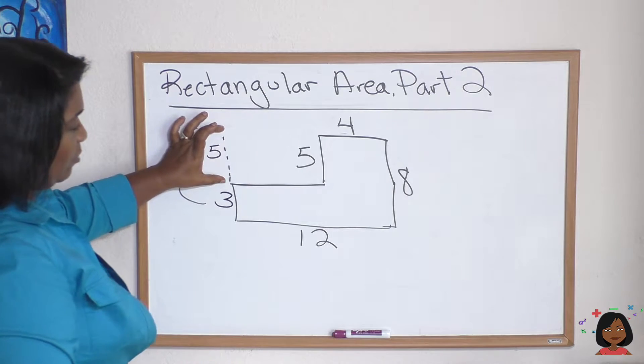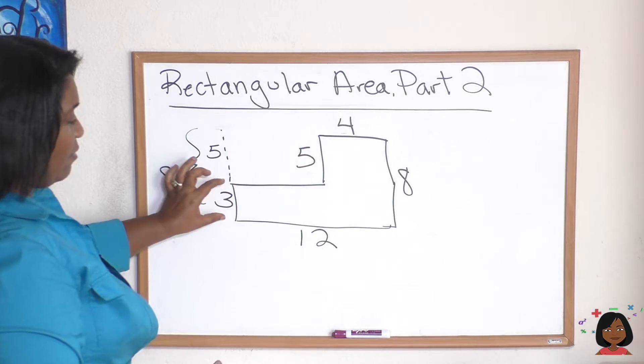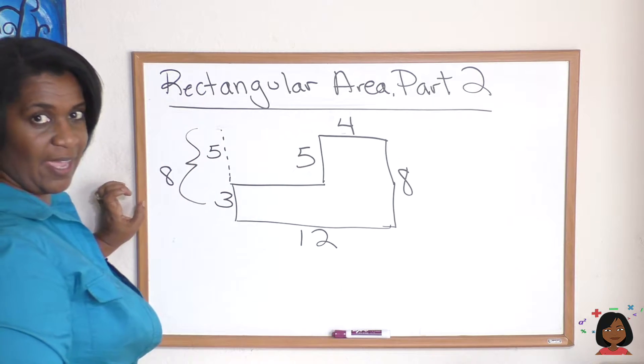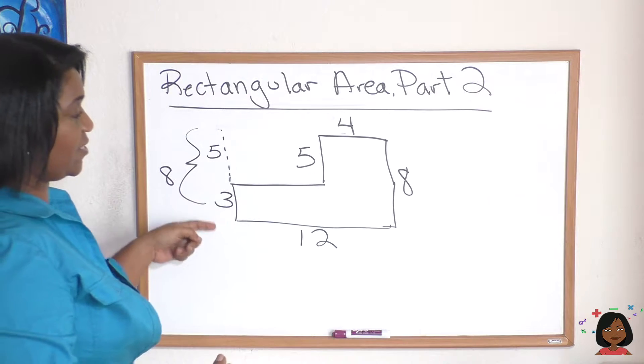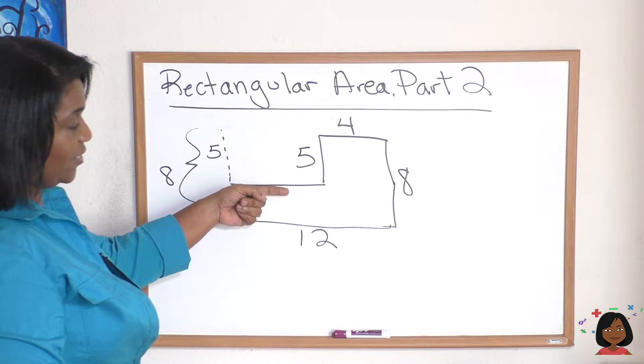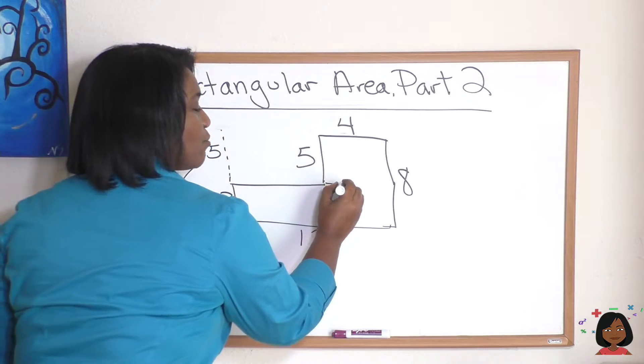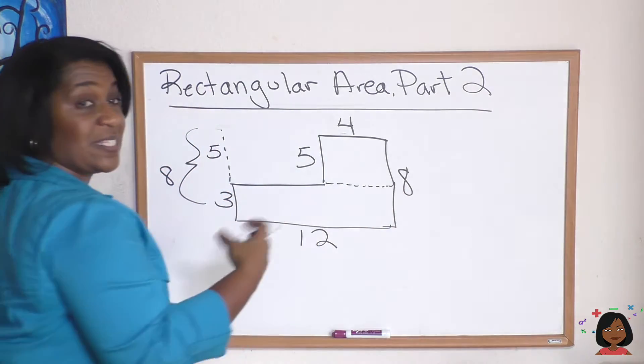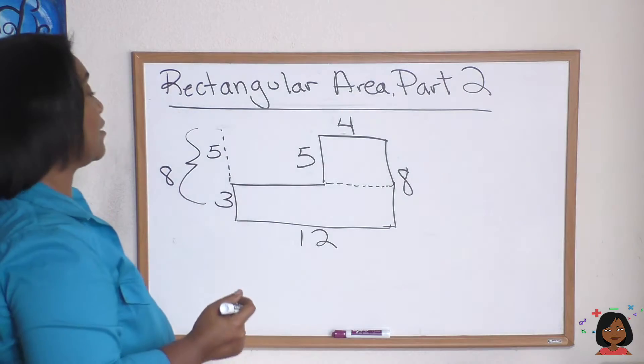So let's try that one more time. This would be five because this is five. This would be three because the whole thing is eight minus five is three. So we've got this side now. Now we need this side. Well, I'm gonna go ahead and draw myself a split this into two actual rectangles.